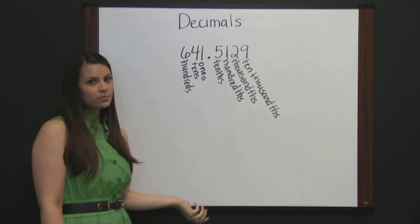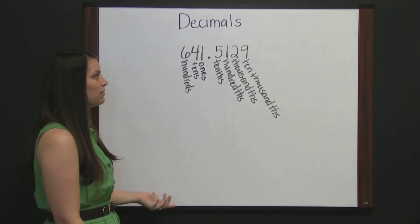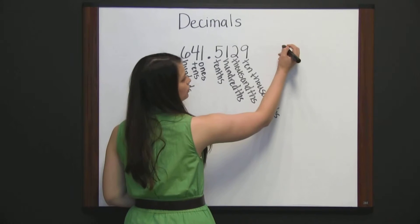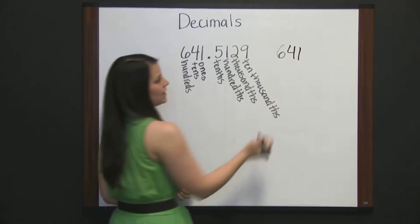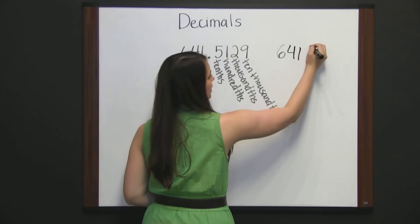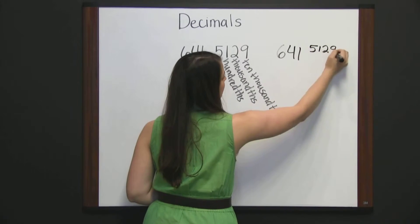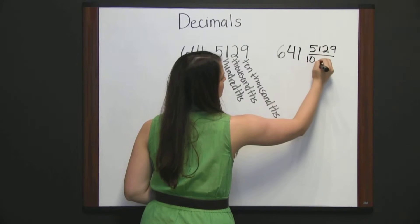This number could also be represented as a mixed number. 641 and 5129 ten thousandths.